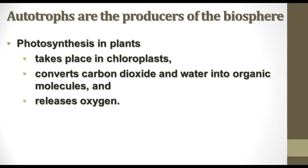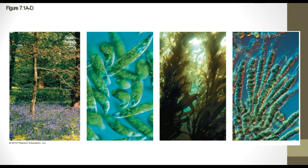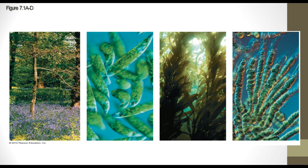In plants, photosynthesis takes place in the chloroplast, which is found in the leaf. The process converts carbon dioxide and water into organic molecules like sugar and releases oxygen as a byproduct. All different kinds of autotrophs — from trees, flowering plants, algae, protista of various kinds, seaweed — use photosynthesis to make food.